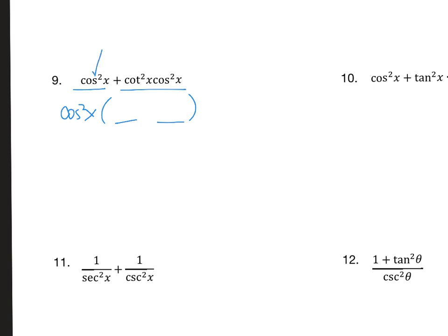I will still have two terms. When I take cos²x out of itself, I'm left with 1, and when I take cos²x out of this, I'm left with cot²x. Now this right here is one of those big kahunas that I was talking about earlier. It is csc²x.